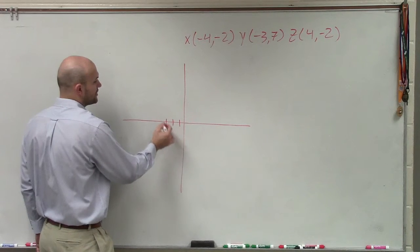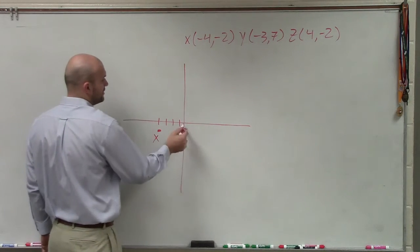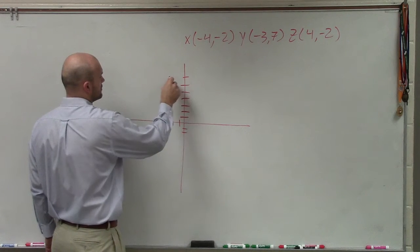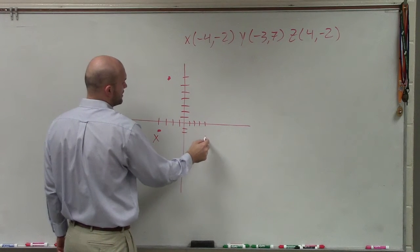Everybody should at least have the points plotted. So negative 4, 1, 2, 3, 4, negative 2. That's x. Negative 3, 1, 2, 3, 4, 5, 6, 7. And then 4, 1, 2, 3, 4, negative 2.